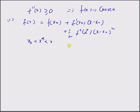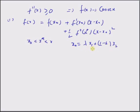Now consider a definition for x naught in terms of two points x 1 and x 2, such that x naught is equal to lambda times x 1 plus 1 minus lambda times x 2. So basically x naught is somewhere between x 1 and x 2.